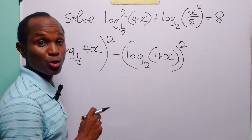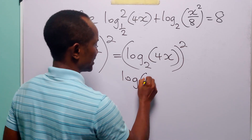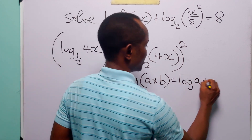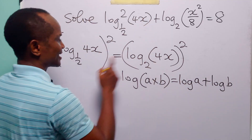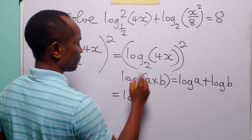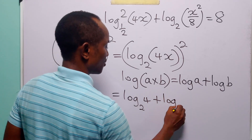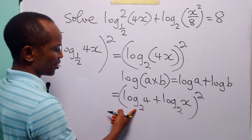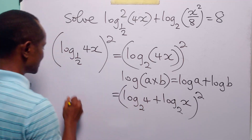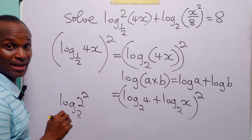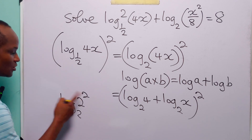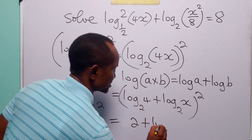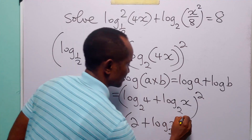Remember that this is a product, and we know that log(a times b) is equal to log a plus log b. So we can express this as log to base 2 of 4 plus log to base 2 of x, all squared. You know that 4 is the same as 2 squared, and log to base 2 of 2 to the power 2 is equal to 2. So this is the same as (2 plus log to base 2 of x), squared.